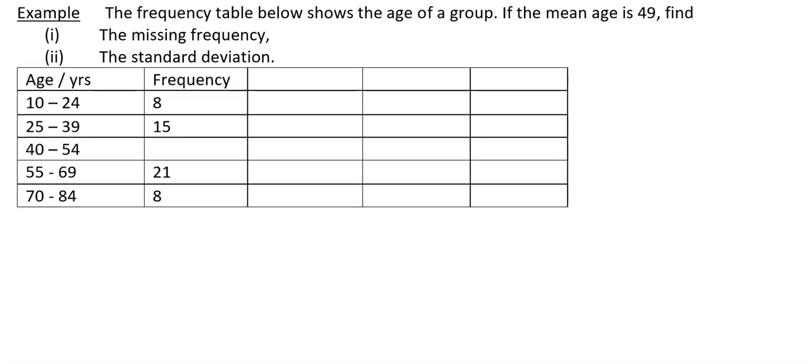Just one example in this video and all we're doing is we have a problem where we have a frequency distribution but we have a missing frequency here. We need to find it and then we have to go on and find the standard deviation. So in this question it says the frequency table shows the age of a group. If the mean age is 49, find the missing frequency.